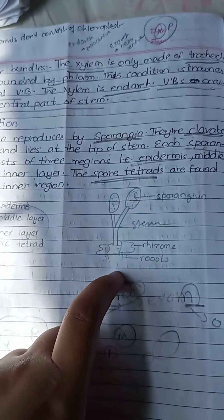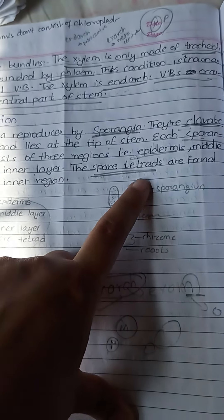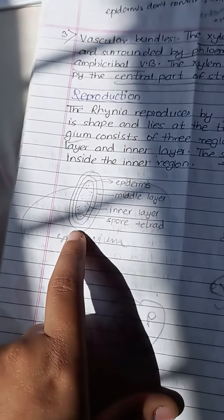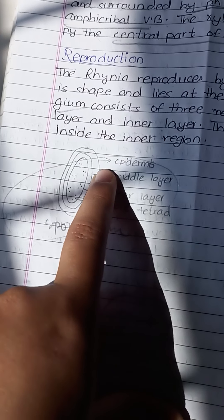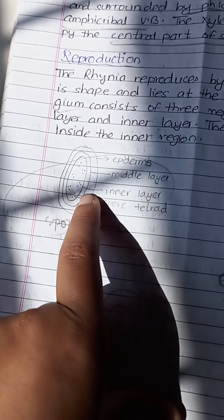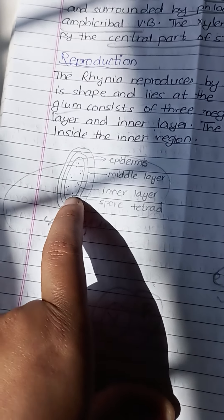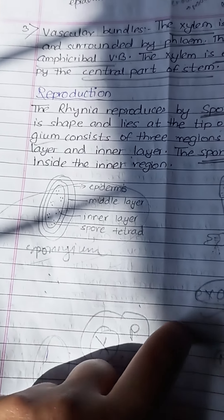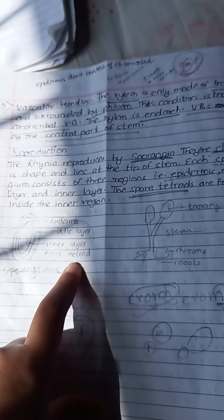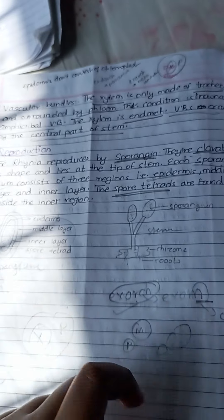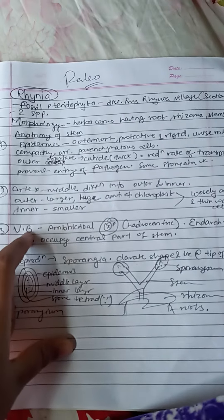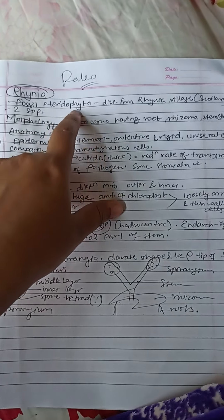So the sporangia is found in the inner layer, which is found in the inner layer. The sporangia is found in the inner layer.